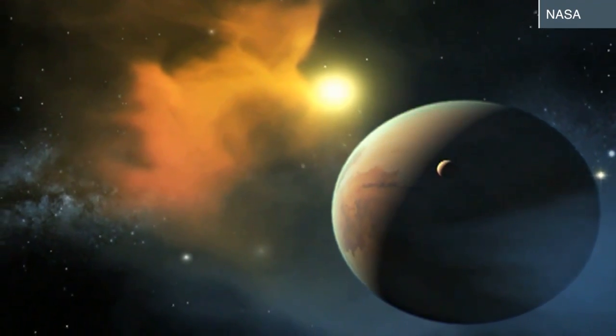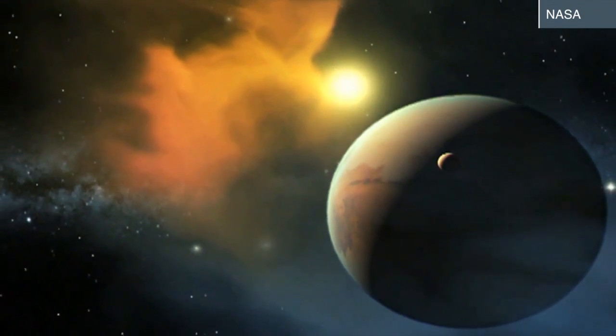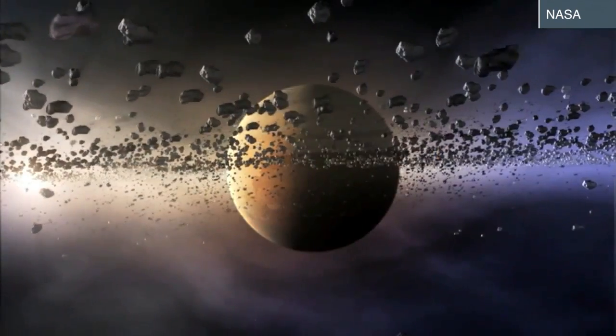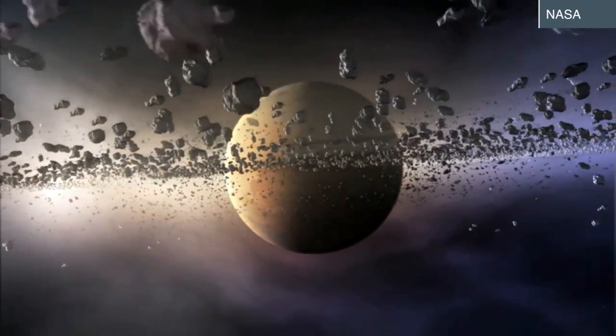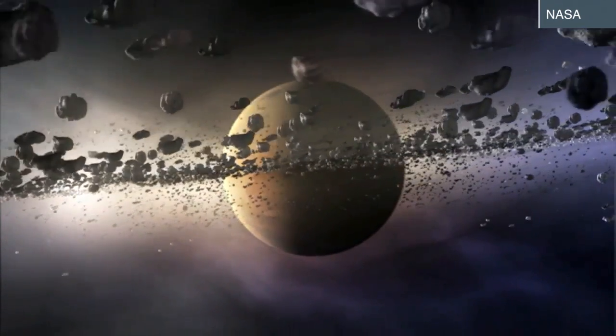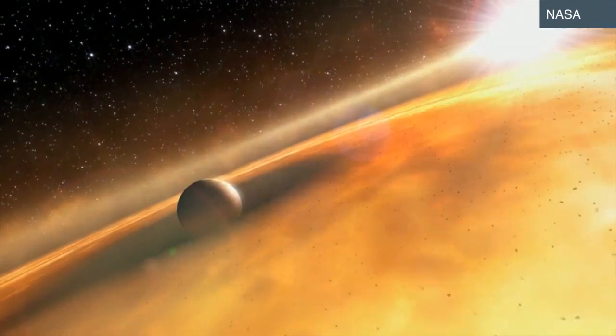It has also identified more than 3,500 candidate planets in the habitable or Goldilocks zone, the distance between a star and planet where temperatures would permit liquid water and possibly life.